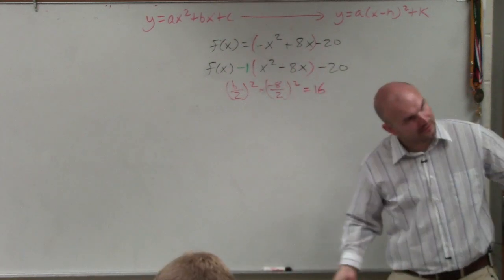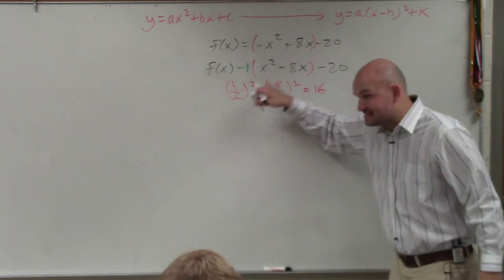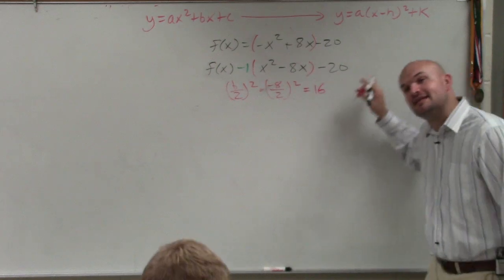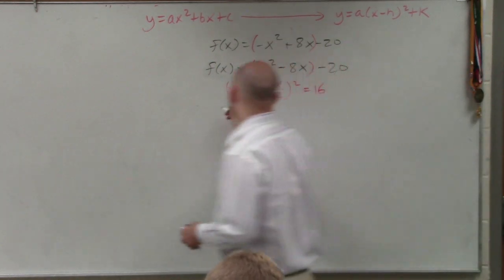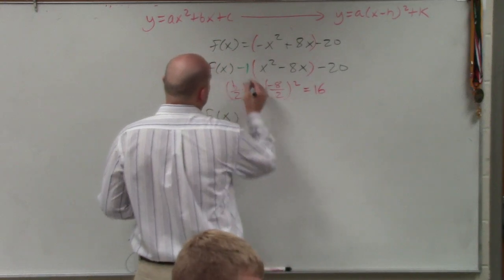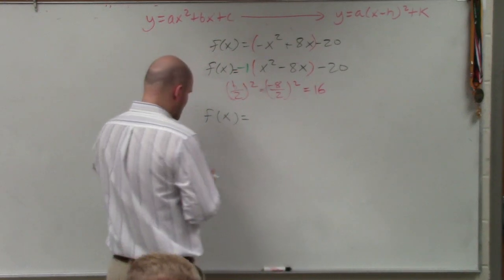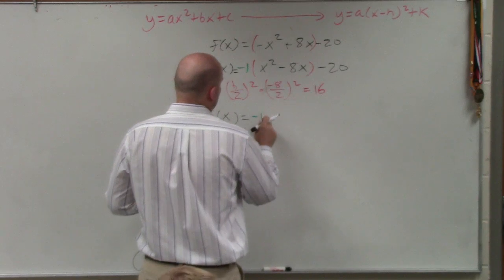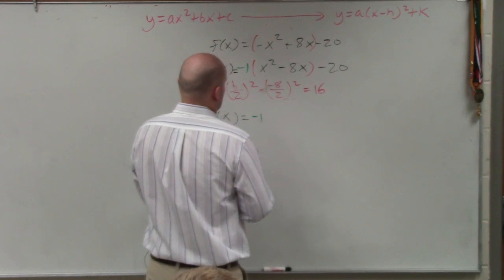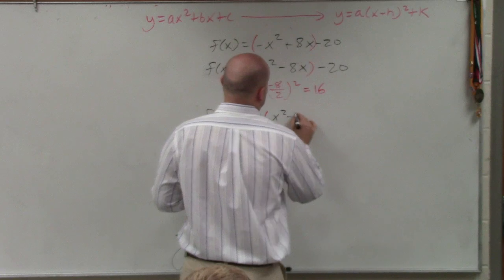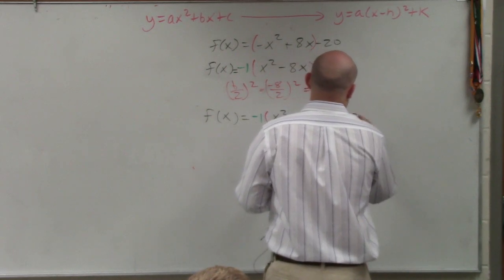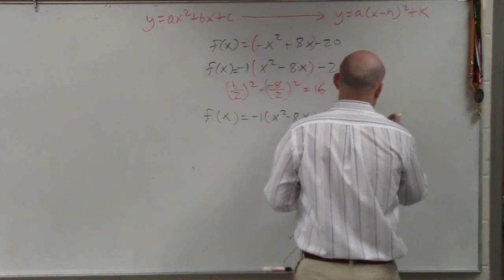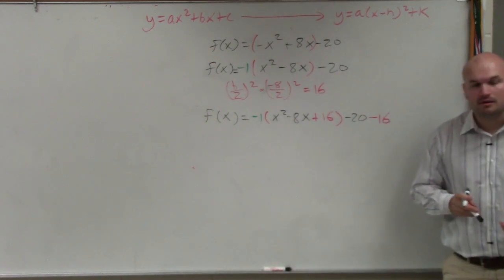Now again, just like we did before, you add the 16 inside the parentheses, and you subtract the 16 outside the parentheses. You see how the process is just the same thing over and over. So I have f of x equals negative 1 times x squared minus 8x plus 16 minus 20 minus 16.